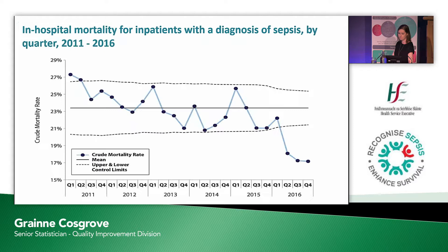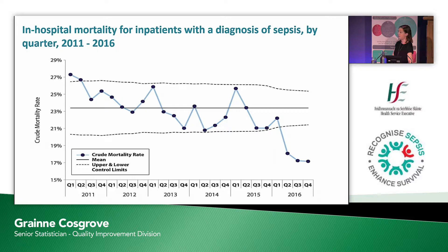In order to look at change over time, we looked at our data in a statistical process control chart showing the quarterly mortality rate since 2011. There's a seasonal variation in sepsis mortality rates — it typically peaks during quarter one and the winter months, likely related to the increase in respiratory illnesses during that time of year. At the end of the chart, in quarters two, three and four in 2016, the mortality rates were below the lower control limit. If nothing had changed, we'd expect all data points to be within the control limits, so this provides us with a signal that there is an improvement in our mortality rate.